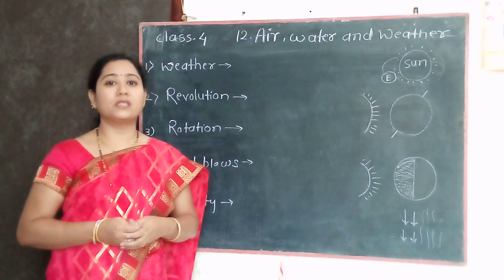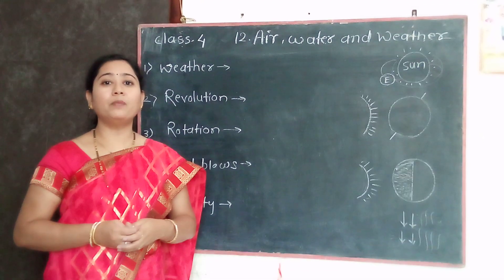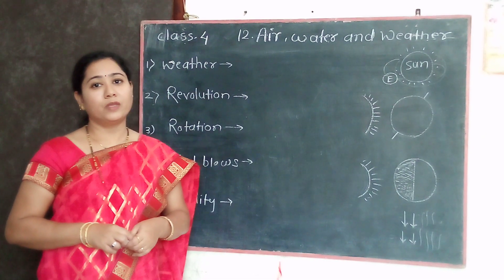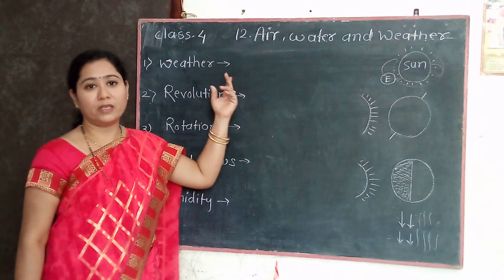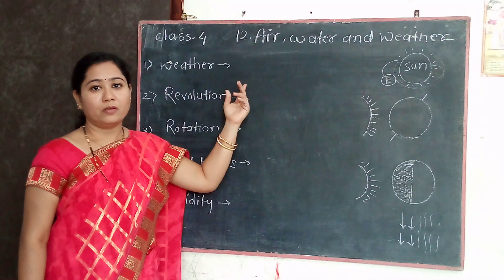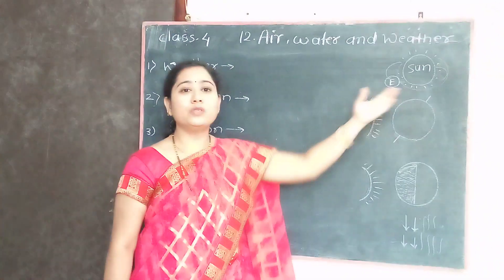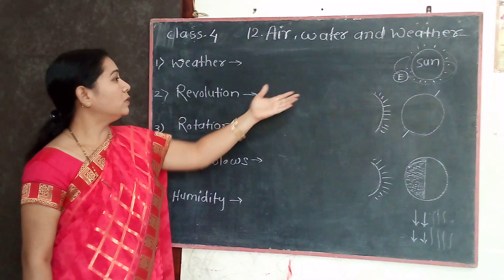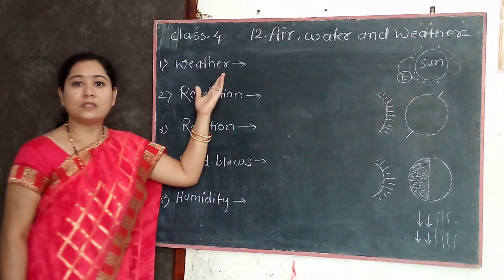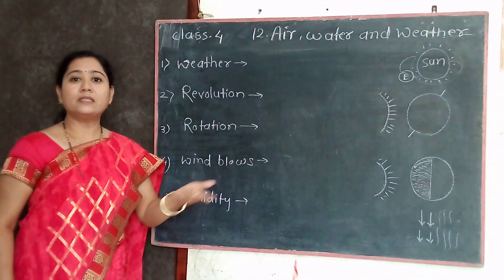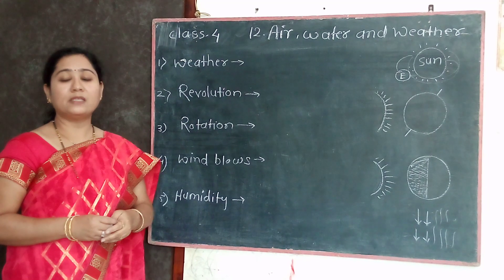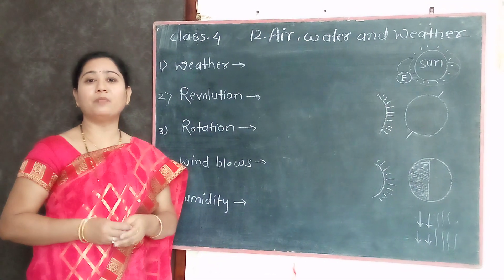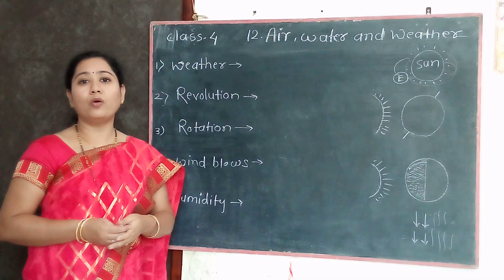This happens because of the sun. The sun plays a major role in causing changes in weather. We know that our earth moves around the sun, and because of the sun, the air gets heated up. At some places there is hot air, and at some places there is cold air.